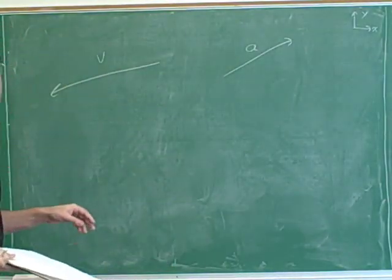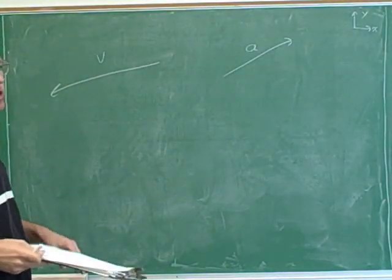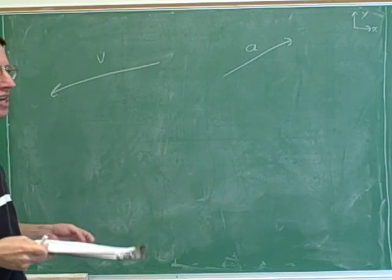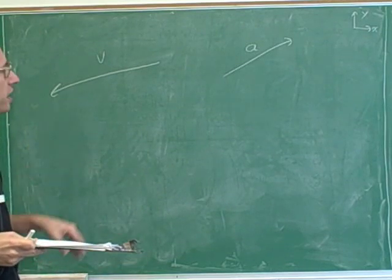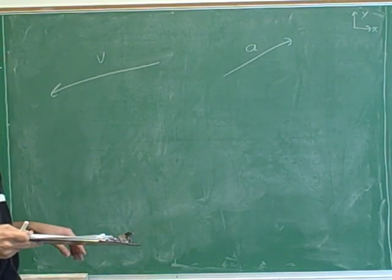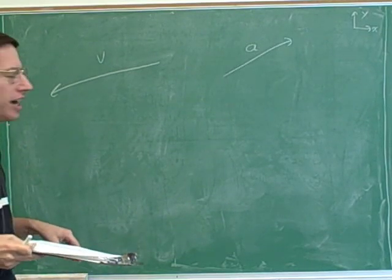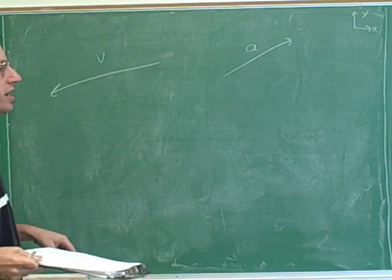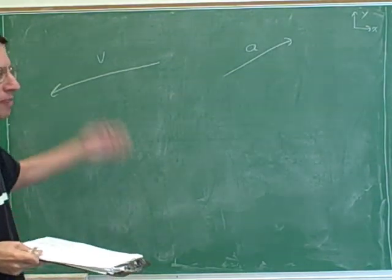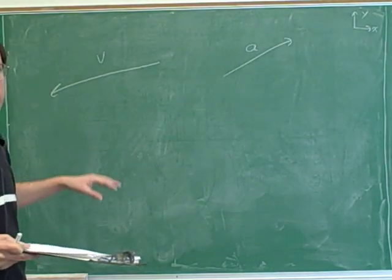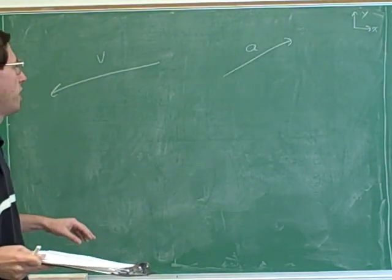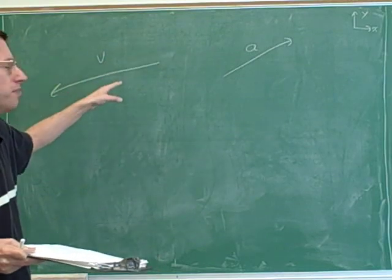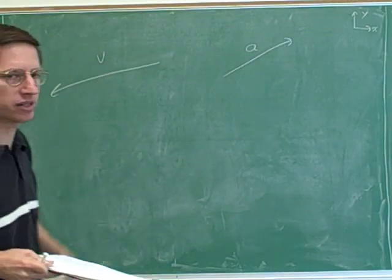Here's another example of the same type. Please try to use the skills we've been working on to write down everything you can about this object. Remember, this is one object that's represented by both of these vectors.